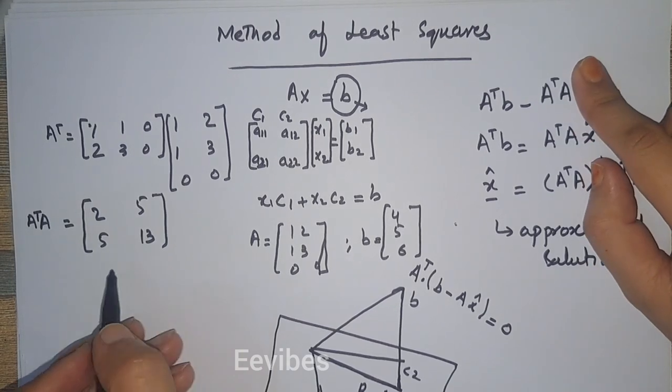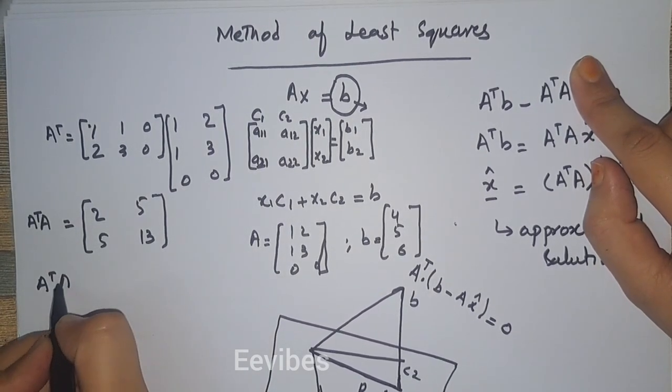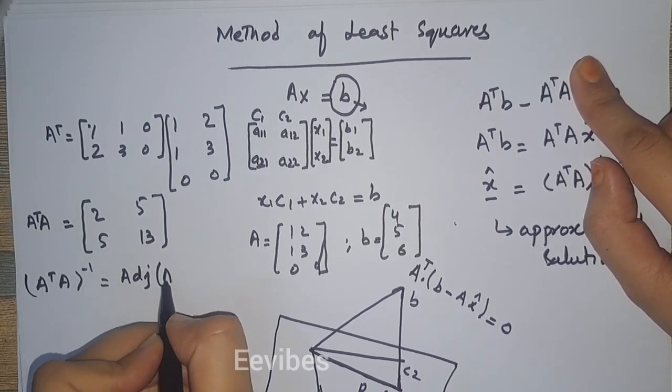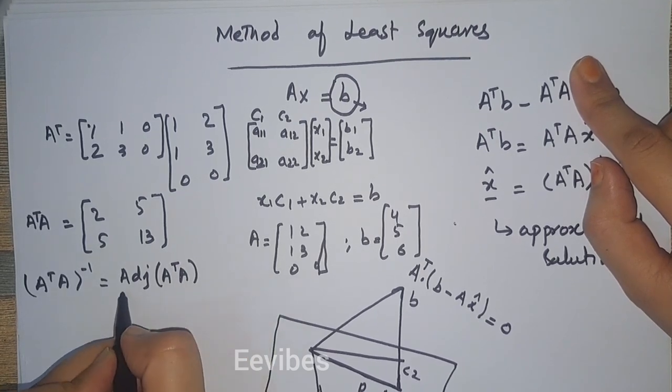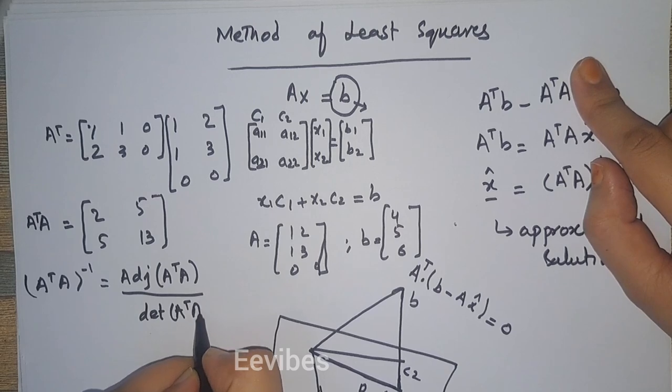The next step is to find the inverse of A^T A, which is equal to the adjoint of A^T A divided by the determinant of A^T into A.